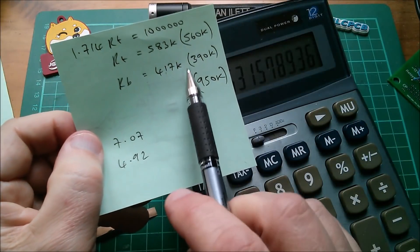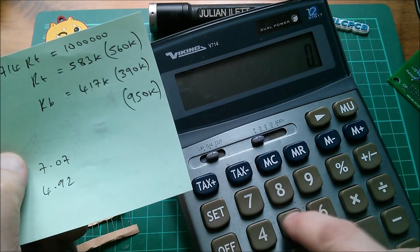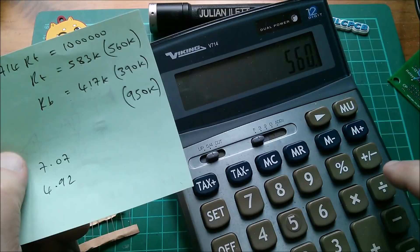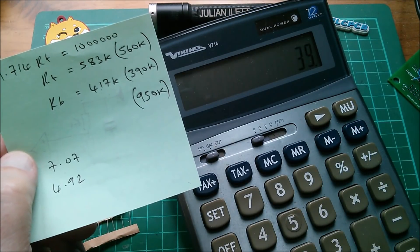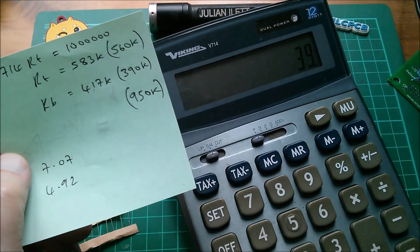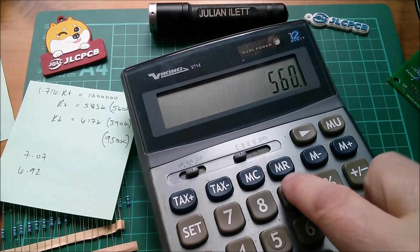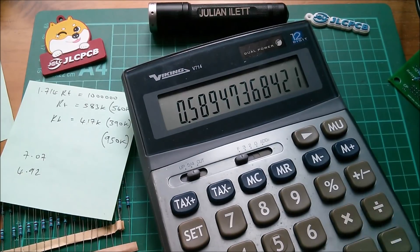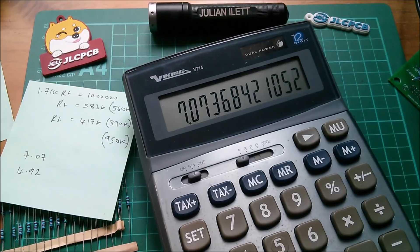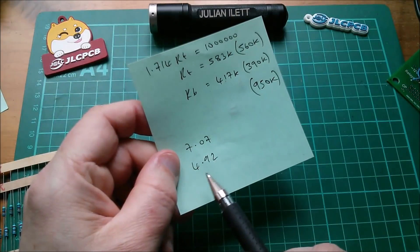Okay, let's try the higher value, 560k. 560 divided by 950, that multiplied by 12, and we get 7.07.